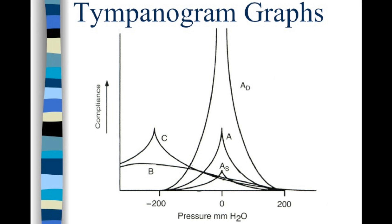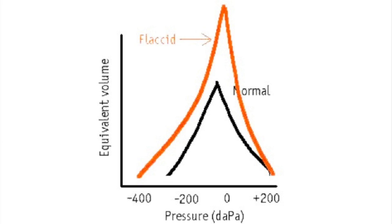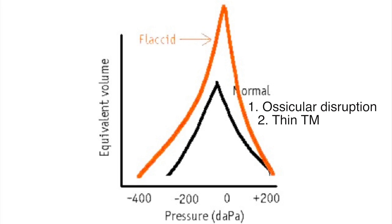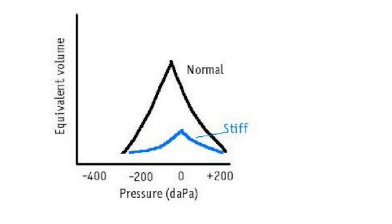What if a tympanogram is not normal? If the peak is really high, this means there's normal pressure in the middle ear, but the tympanic membrane is floppy. This could be from: 1. ossicular disruption, or 2. a thin tympanic membrane, such as when it's healing over after a perforation.